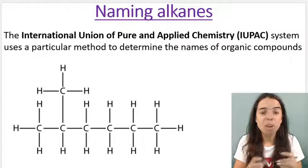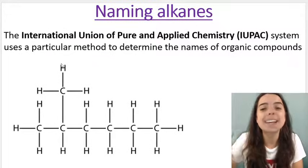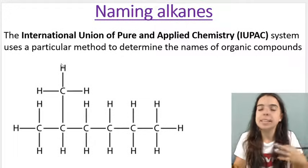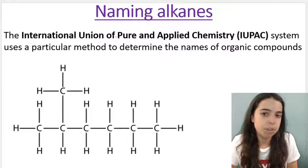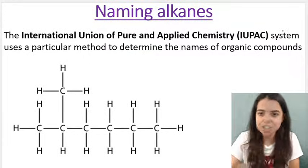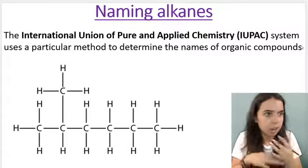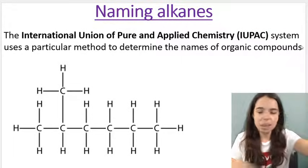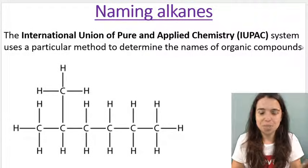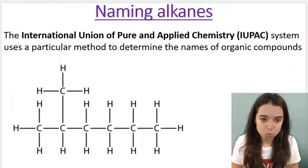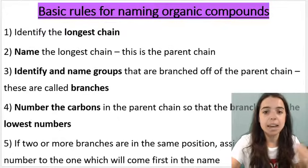When we name organic compounds we use the IUPAC system — the International Union of Pure and Applied Chemistry. Don't worry about knowing the long version. You can call it IUPAC, and it's used internationally so that chemists across the world can recognize a compound when they read the name. There are rules when it comes to naming organic compounds, and in particular naming alkanes.